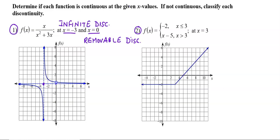We have to check whether the function is continuous at x = 3. A function is said to be continuous if we can draw the graph entirely without taking the pen out. At x = 3, we don't need to remove the pen — we can draw the graph continuously, so the function is continuous at x = 3.